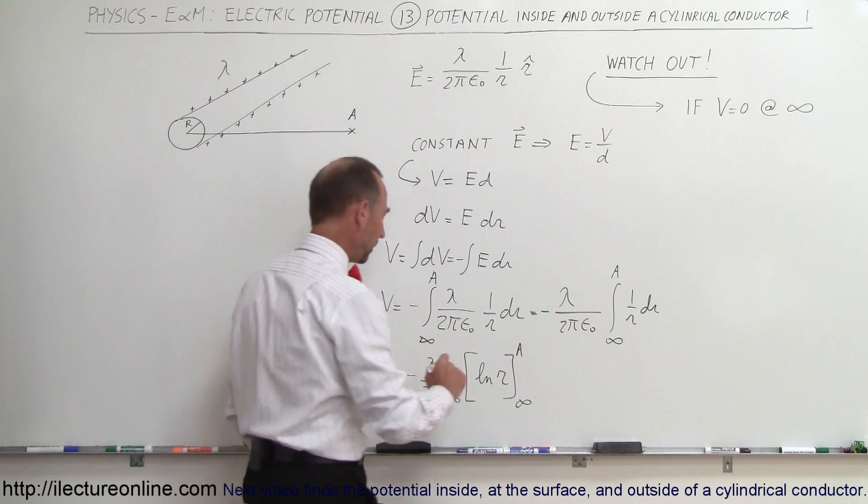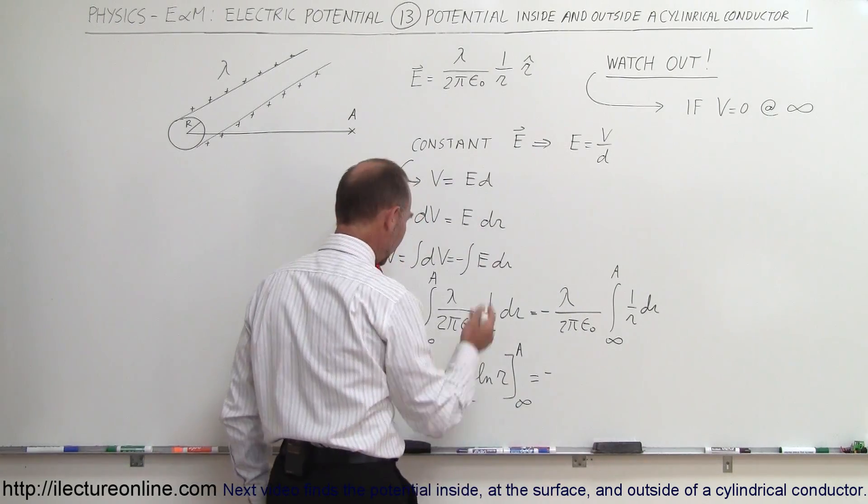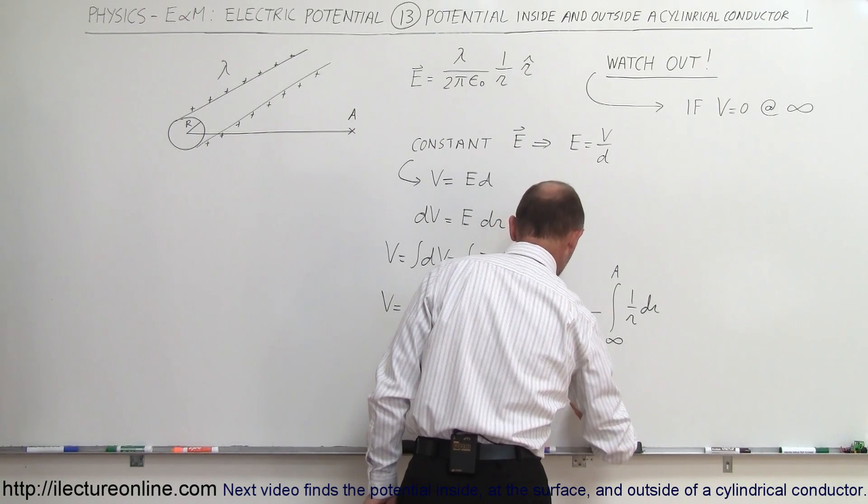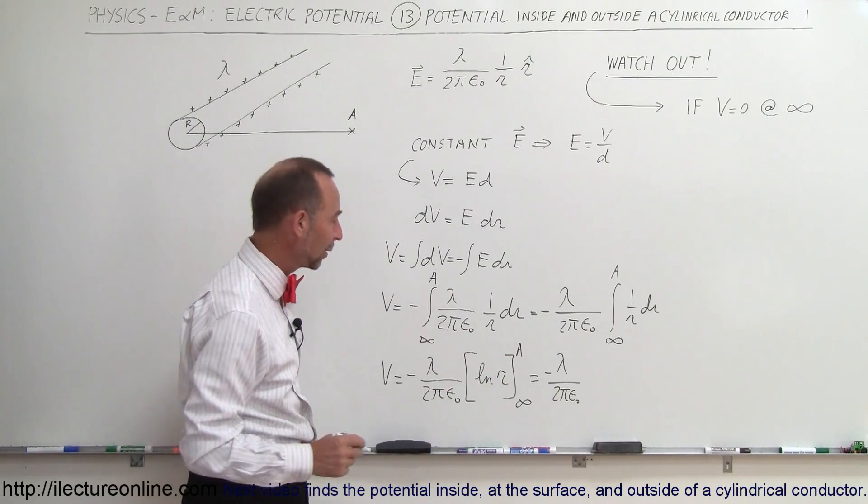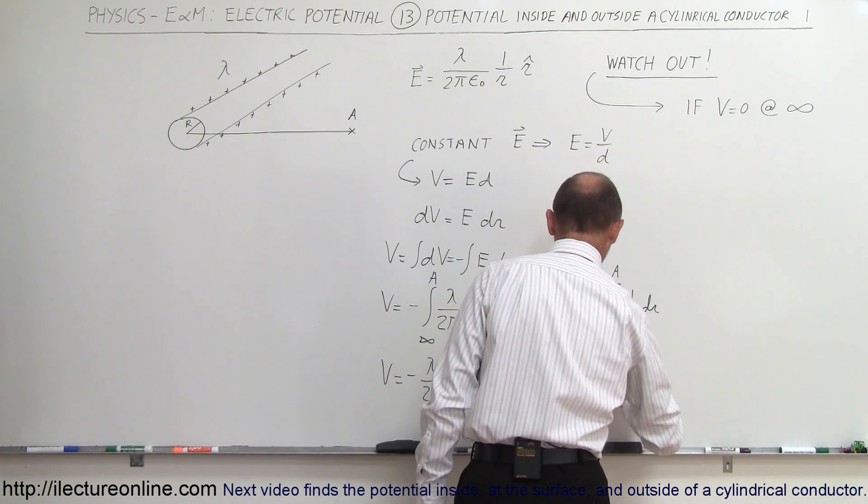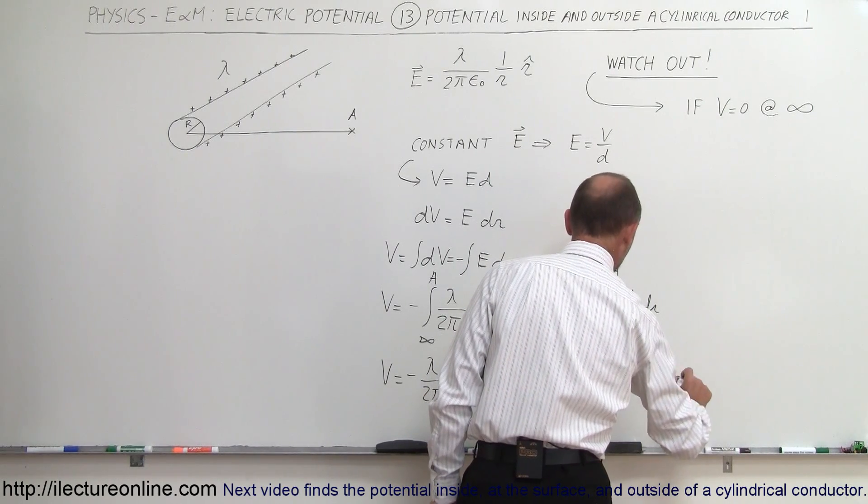Let's plug in the limit, see what we get. That's equal to minus lambda over 2π epsilon nought. Sometimes what I do is get rid of the negative sign by flipping the limits, that's one way to get rid of the negative sign, but let's not worry about that now. So we plug in the upper limit, so we get the natural log of A minus the natural log of infinity.